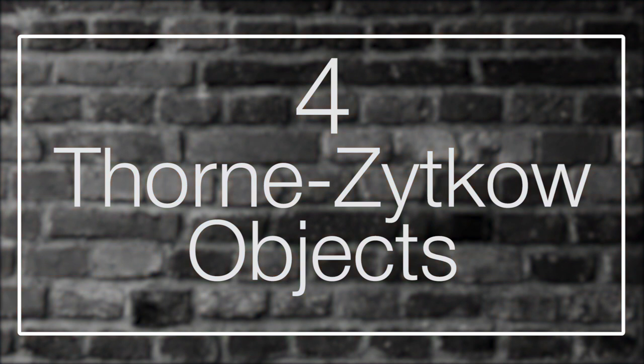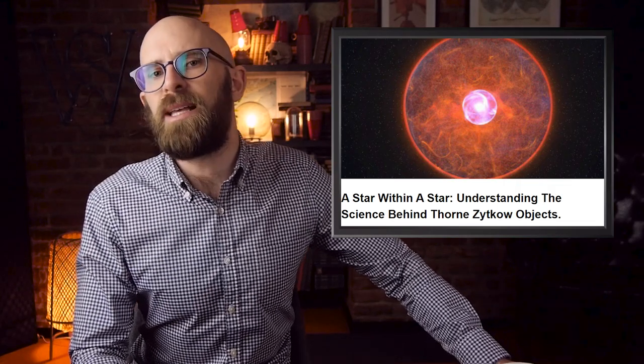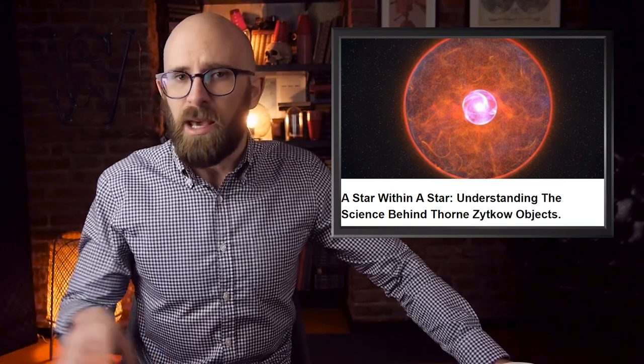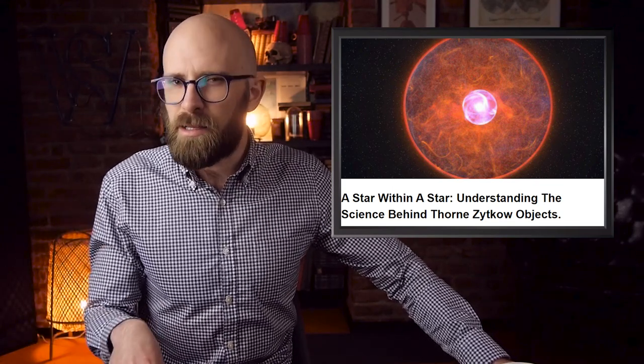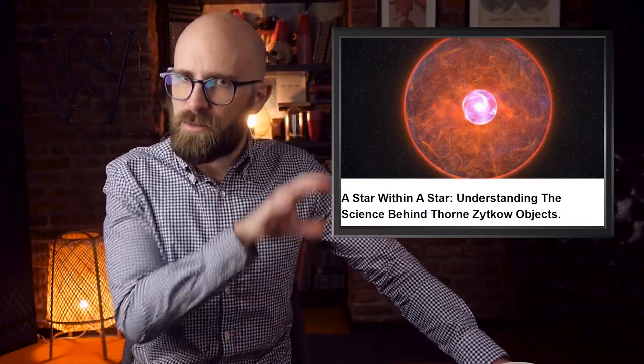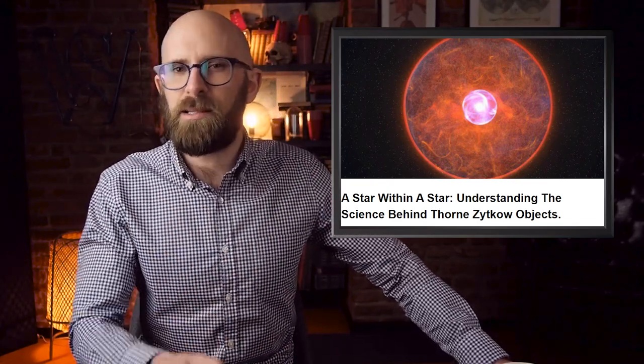Number 4: Thorne-Zytkow Objects. These things were originally thought to be merely hypothetical objects. That was, at least until one was discovered. A Thorne-Zytkow object is essentially a star within a star that's created when a red supergiant consumes a neutron star. If the thought of something like this doesn't terrify you, wait until you hear what these objects are actually like.